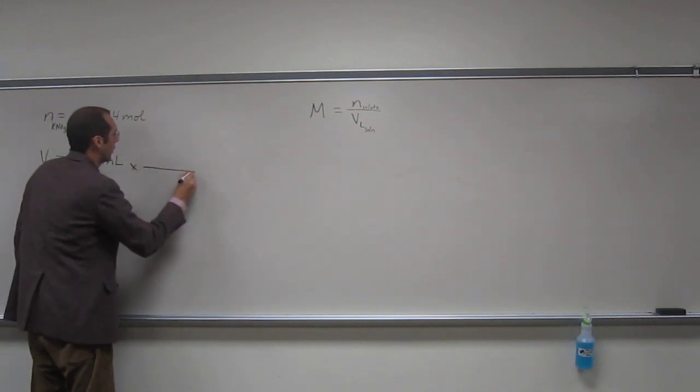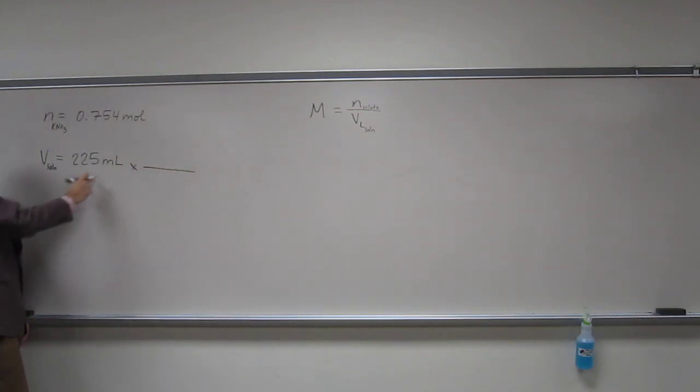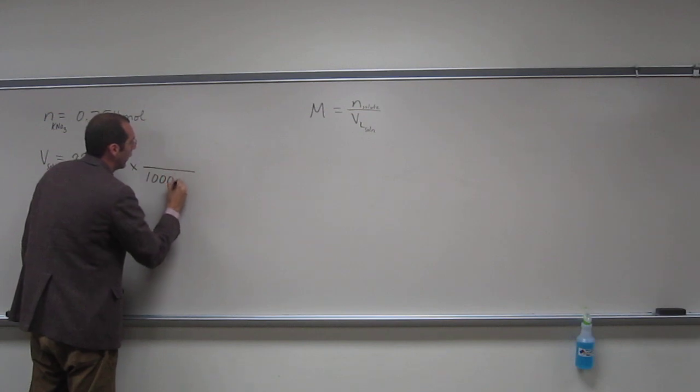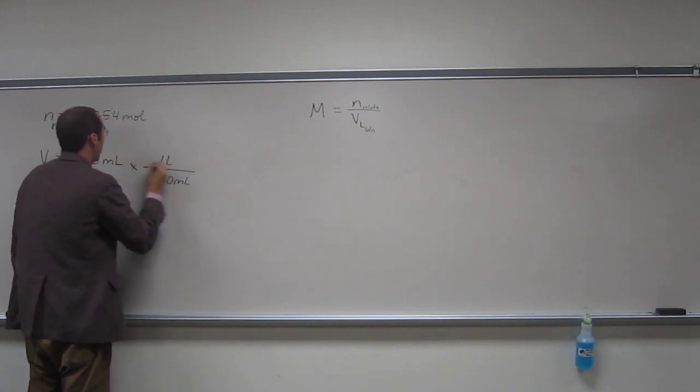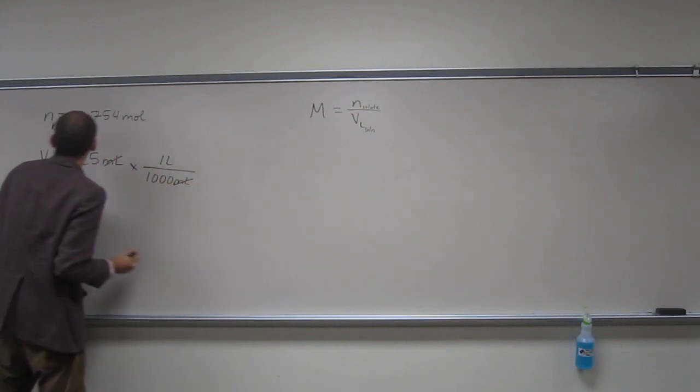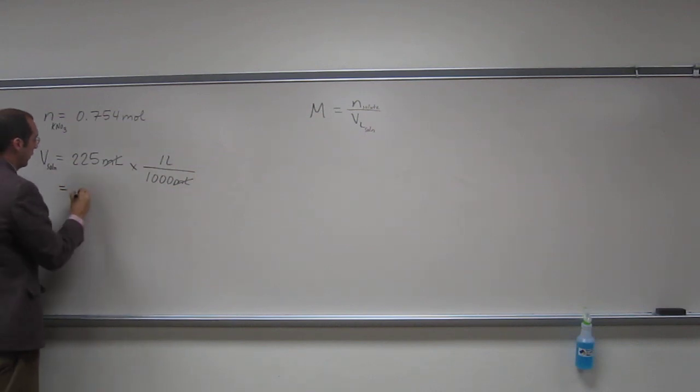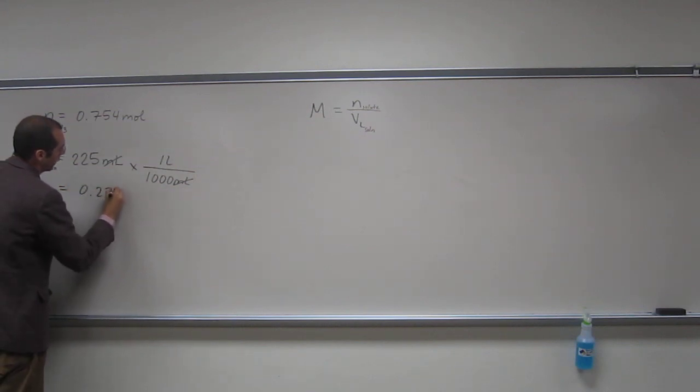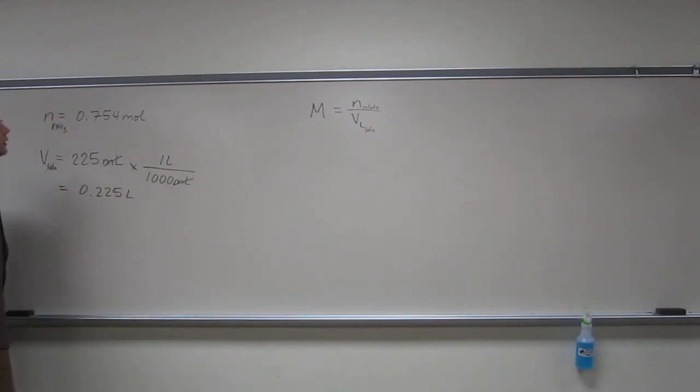So how do we convert? So we've got to convert milliliters to liters, right? 1,000 milliliters equals one liter. 225 milliliters.